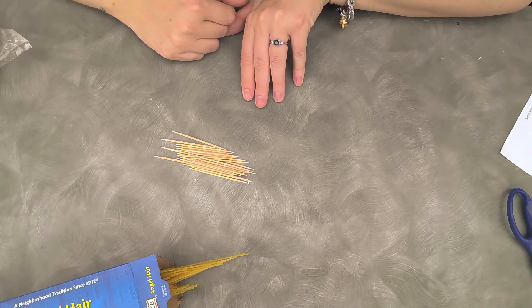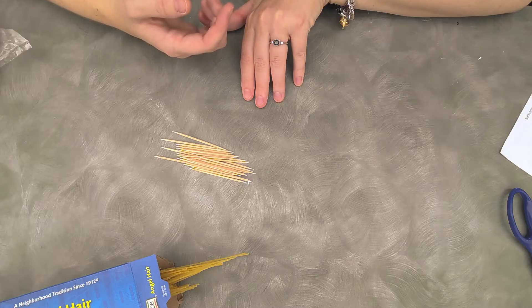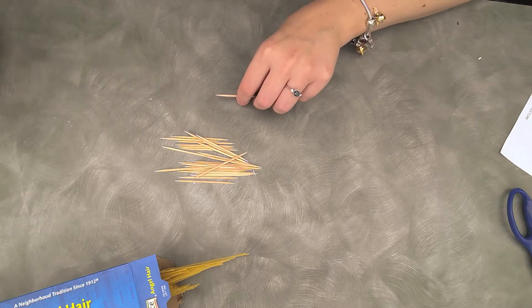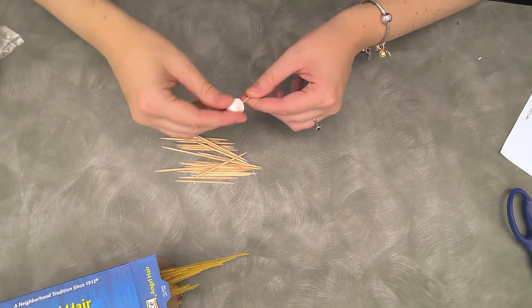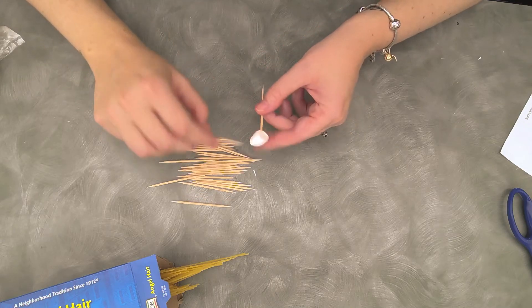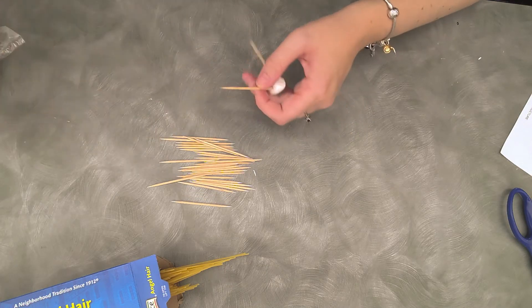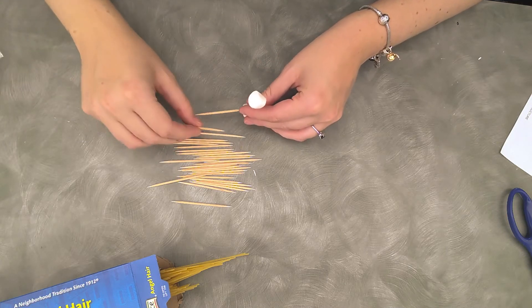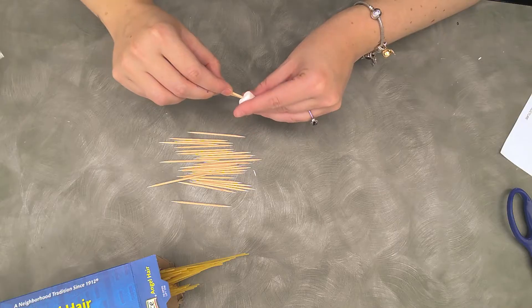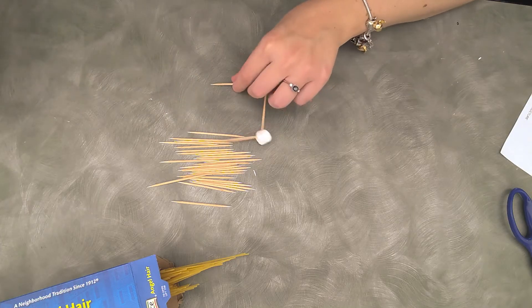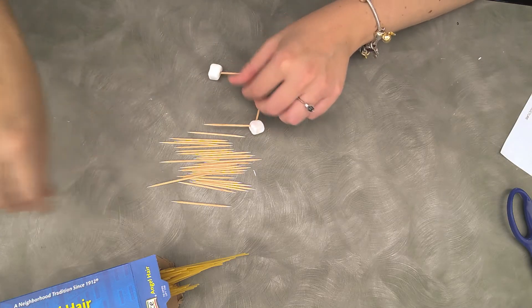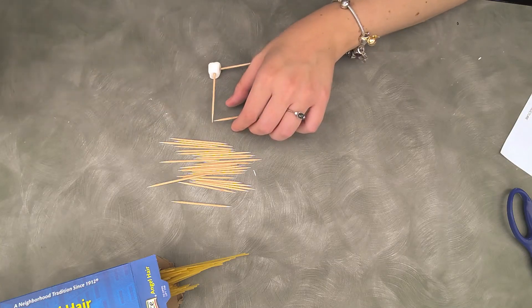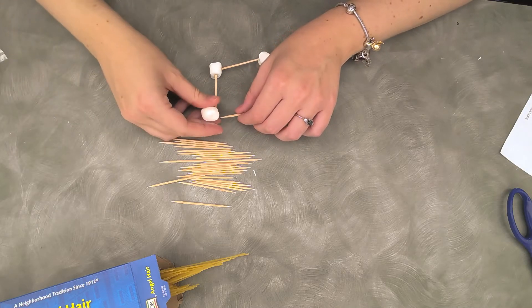So we're going to do a quick test first. And I want you to make a prediction. If I make a square shaped structure, do you think that's stronger than making a triangle shape structure? We're going to do a mini test first. If you want to pause the video to make your predictions, this is just going to be a very small one to start.